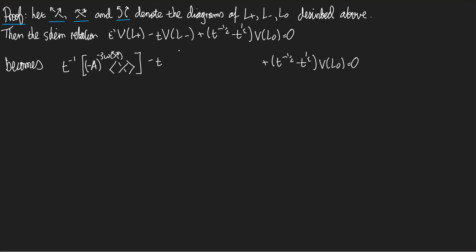Now, what happened to the arrows on the diagram when I wrote the Kauffman bracket — shouldn't there be arrows in this diagram? No, because whereas the writhe is an invariant of diagrams of oriented links, the Kauffman bracket doesn't care about the orientation. So I can leave the arrows off. Then minus T times minus a to the minus three times the writhe of the second diagram with the negative crossing, times the Kauffman bracket of that second diagram.